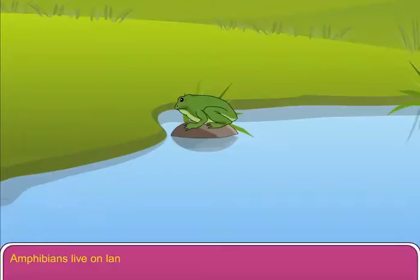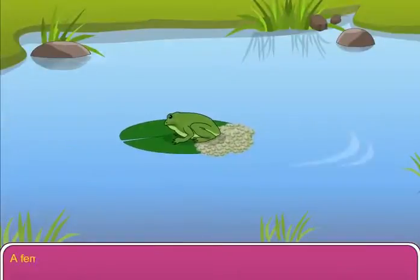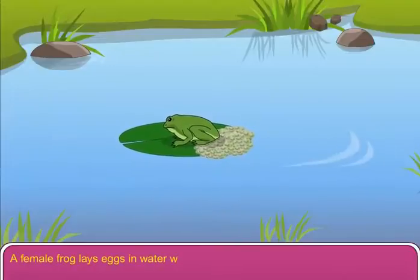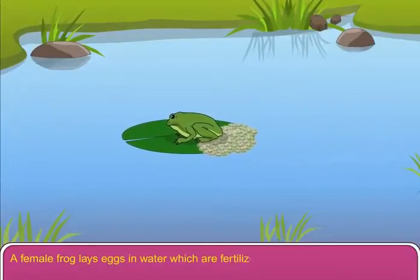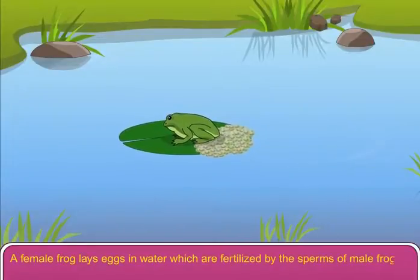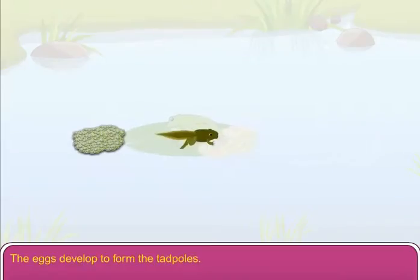Amphibians live on land as well as in water. They lay their eggs in water. A female frog lays eggs in water, which are fertilized by the sperm of male frogs. The eggs develop to form the tadpoles.